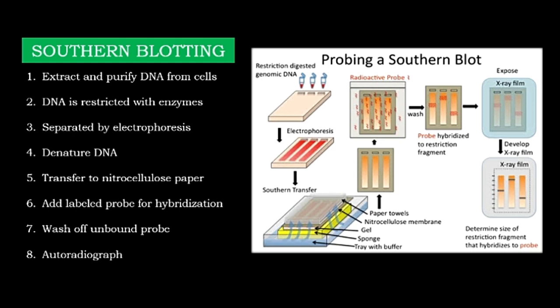Now let's move into the types of blotting one by one. As you can see in this slide, I have divided Southern blotting into eight major steps. First, we extract and purify the DNA from the cells. Second, we digest that DNA with restriction enzymes. Third, we separate the digested DNA by gel electrophoresis. Fourth, we denature the DNA. Fifth, we transfer the DNA from the gel onto nitrocellulose paper. Sixth, we carry out the hybridization process with a radiolabeled probe. Seventh, we wash off the unbound probe that has not bound to the target. And eighth, we carry out autoradiography.